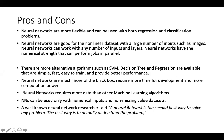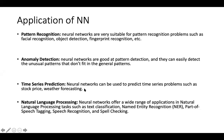A well-known neural network researcher said: neural network is the second best way to solve any problem — the best way is to actually understand the problem itself. The researcher clearly states that the second best way is to apply neural networks, but the first priority is understanding the problem. Applying neural networks blindly without understanding the problem is not the right approach.